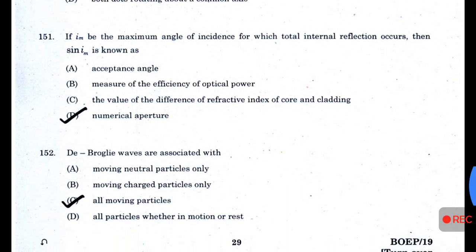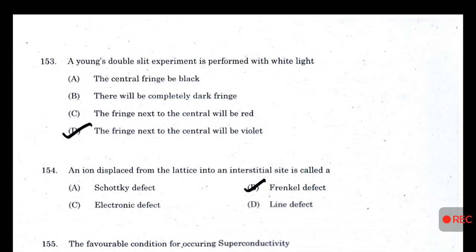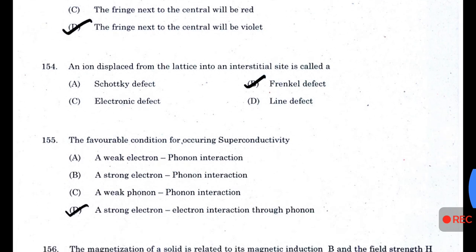A rotating calcite crystal is placed over an ink dot; on seeing through the crystal, one finds — answer C — one dot rotating about the other. If I_M is the maximum angle of incidence for which total internal reflection occurs, then sin(I_M) is known as the numerical aperture. De Broglie waves are associated with all moving particles. In a Young's double-slit experiment performed with white light, the fringe next to the central fringe will be violet.